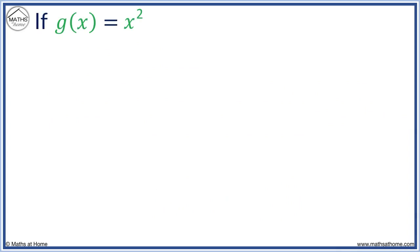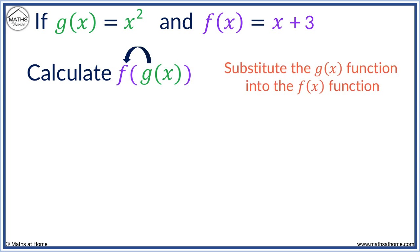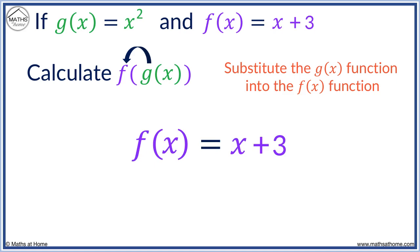For example, if g of x equals x squared and f of x equals x plus 3, calculate f of g of x. This means that g on the inside is the input to f of x on the outside. We substitute the g of x function into the f of x function. This backwards arrow shows us which function goes into which — g is being substituted into f, so we start with f of x, which is x plus 3.